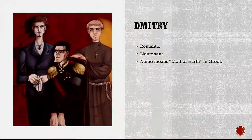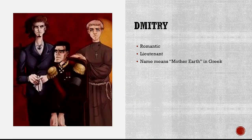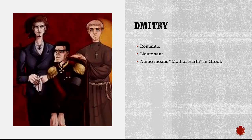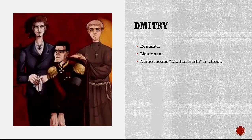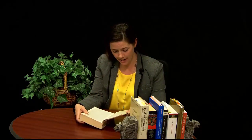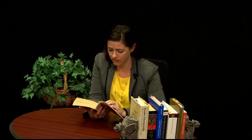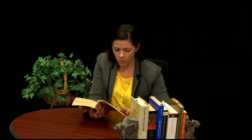First we have Dmitri. Dmitri is our romantic lieutenant. His name means Mother Earth in Greek, and our first introduction to Dmitri is that he is the product of Fyodor's first marriage. His mother really should have never married Fyodor. When we first hear about Dmitri, we see that she was well-off, from a good family, and that she was marrying him out of rebellion — which is important to remember.